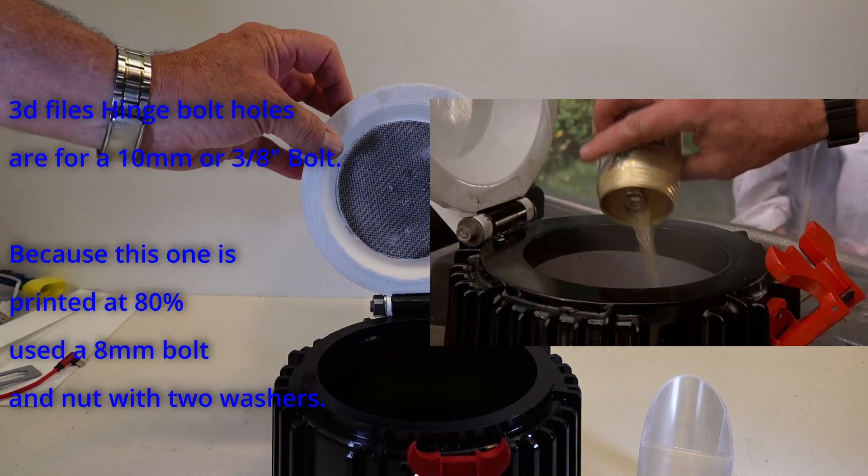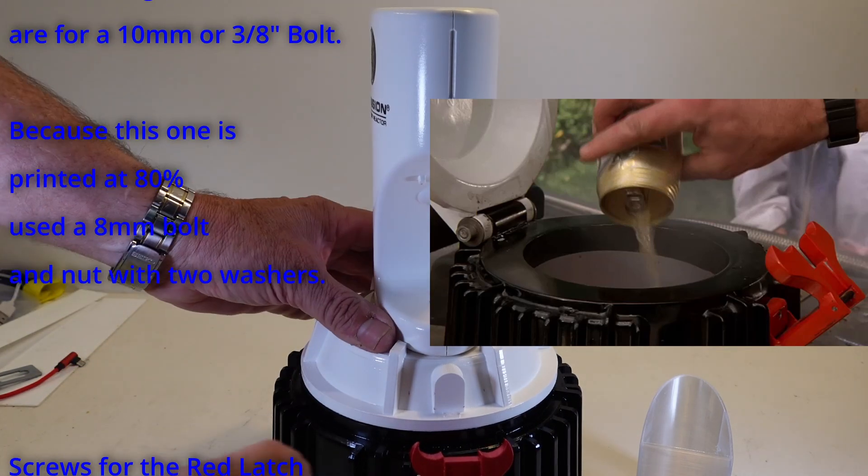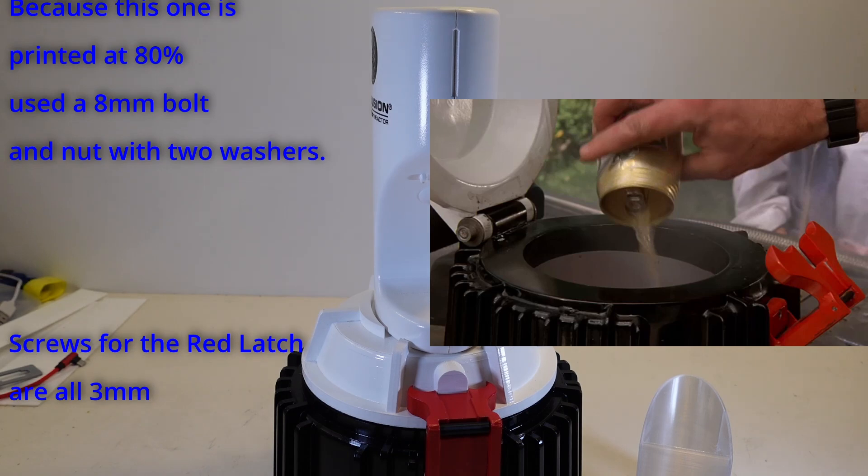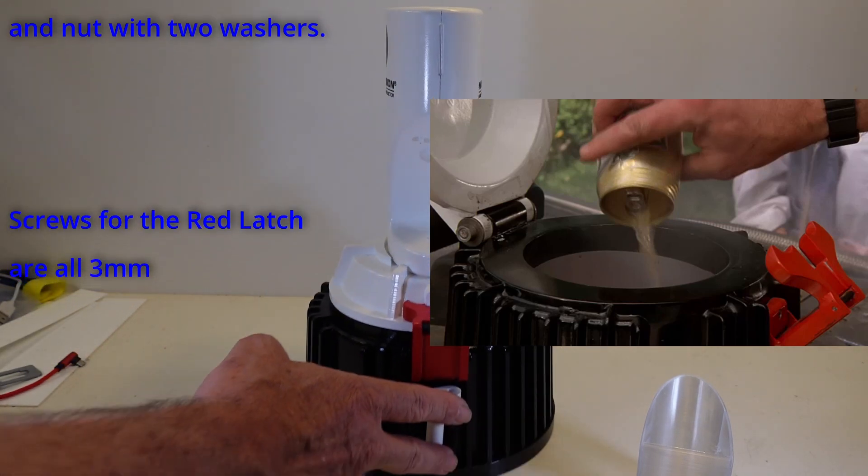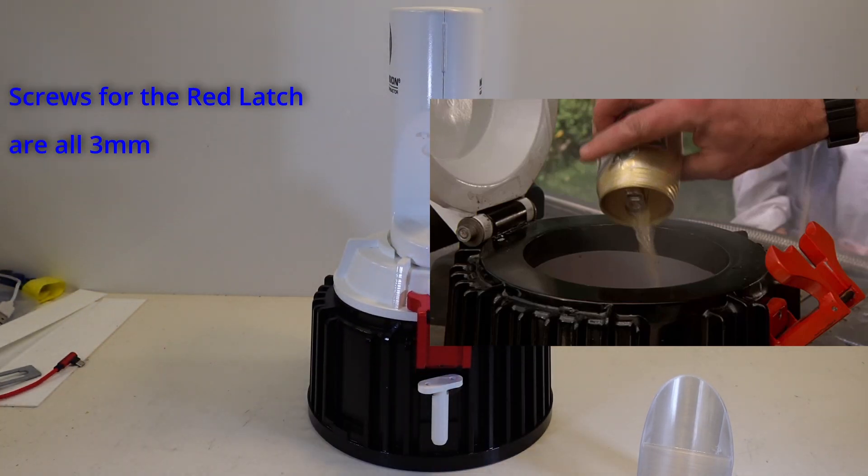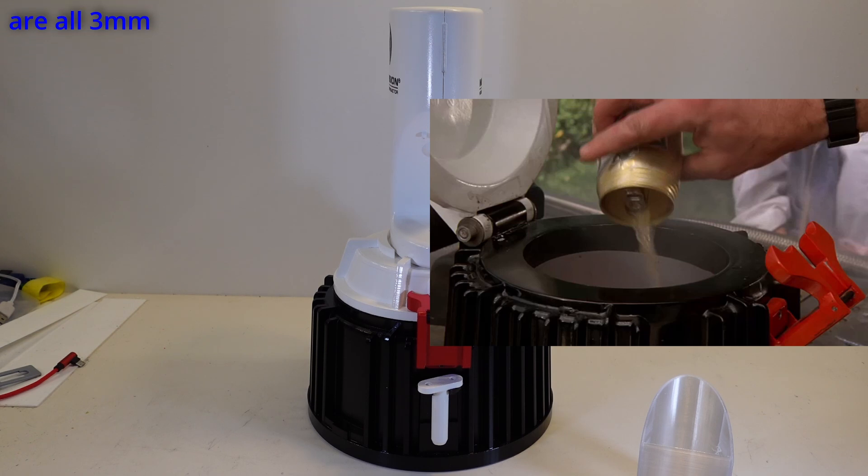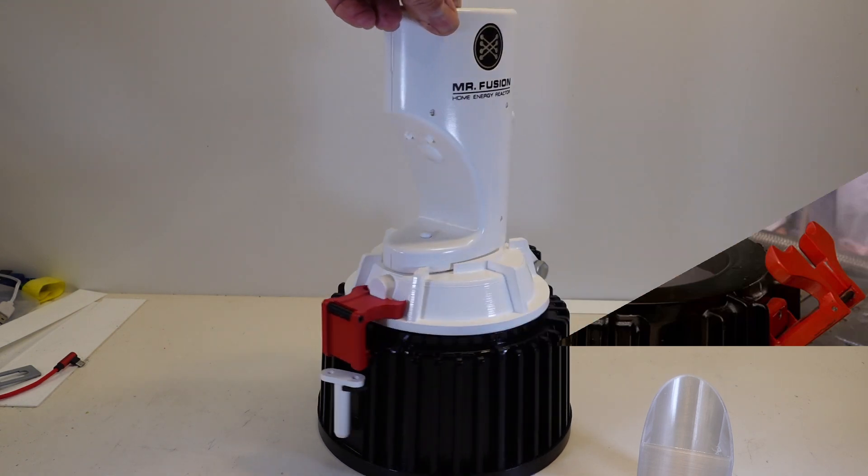I put some fly screen in there just to hide the overhang that was there from the printing. The original didn't have that, but I thought I'd do that just to hide it, otherwise I'd have to clean it up too much.